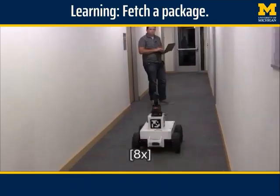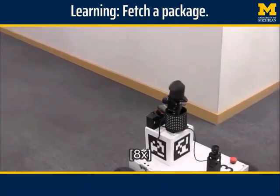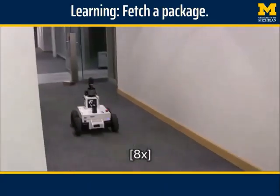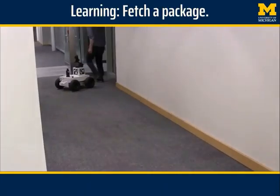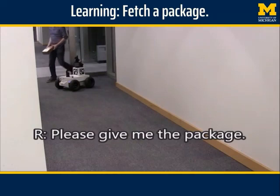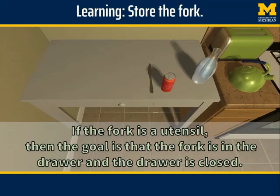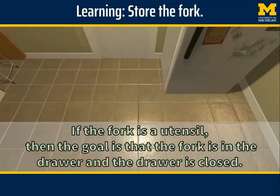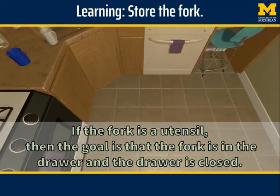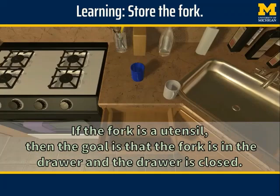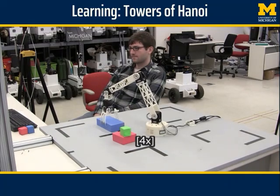In this video we present Rosie, an interactive task learning agent that learns new tasks in one shot from situated natural language instruction. It has been used with multiple real and simulated robots and can learn a wide range of household and office tasks. It has also been used to learn over 60 games and puzzles through instruction.